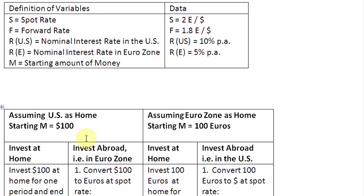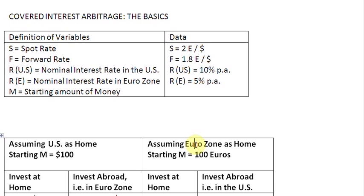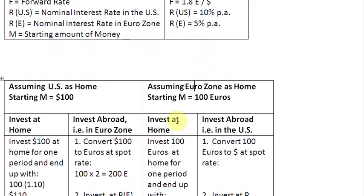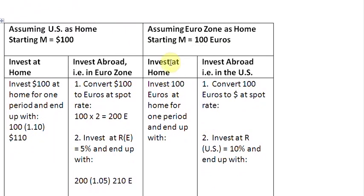Now, typically foreign exchange traders do not have a particular home country. They want to start from a currency where they see there is going to be a benefit. So let's also assume that somebody wants to start with the Eurozone as the home country. We give this person the same starting amount but in their currency — 100 euros. If we invest 100 euros at home for one period, at the end of one period we are going to end up with 105 euros, since the interest rate in the Eurozone is 5%.